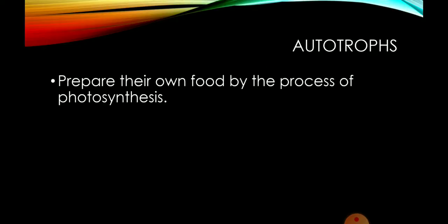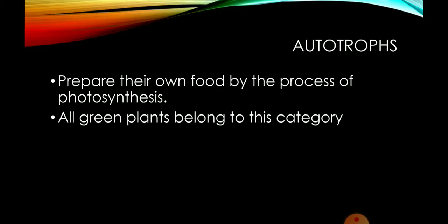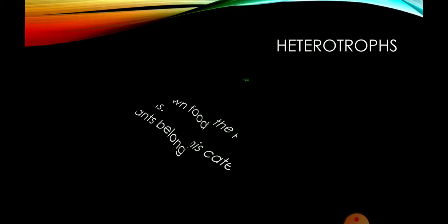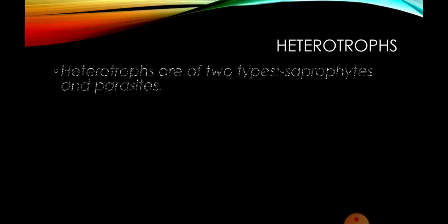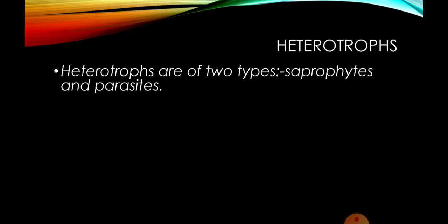Autotrophs देखिए — they prepare their own food by the process of photosynthesis. जितने भी green plants होते हैं वो इसी category में आते हैं क्योंकि ये सारे carbon dioxide लेकर, water लेकर, और sunlight की presence में chlorophyll के अंदर अपना food बनाते हैं। Carbon dioxide लेकर oxygen छोड़ते हैं — these are autotrophs. Heterotrophs की two categories होती हैं — saprophytes and parasites.